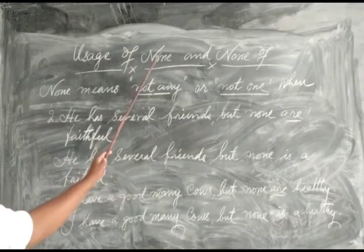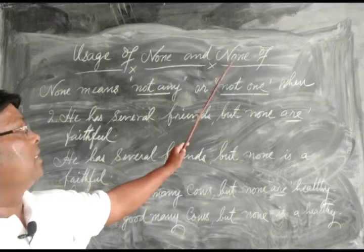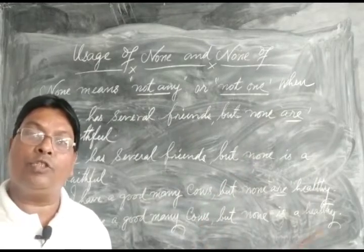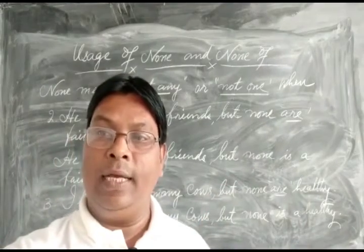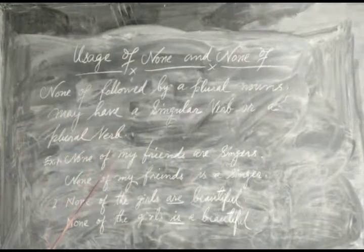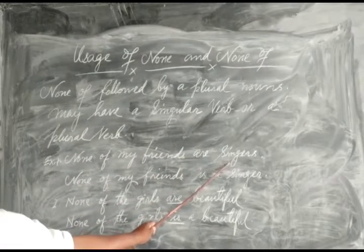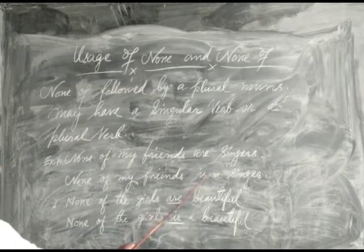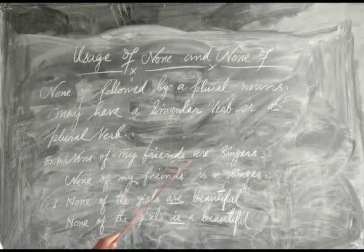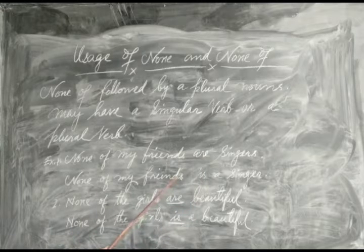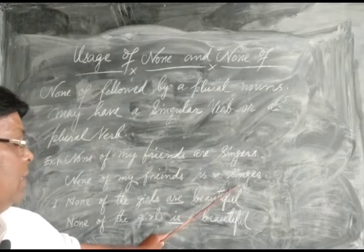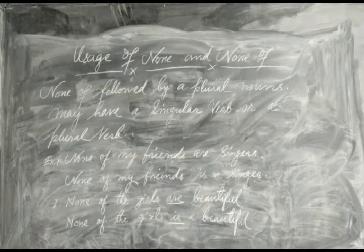So those are the uses of 'none.' Now we are going to see the uses of 'none of' with more examples. 'None of my friends are singers' — here, with reference to the plural noun 'friends,' the plural verb is used. The same sentence with singular understanding: 'None of my friends is a singer' — here 'is' is singular, referring to each individual friend.